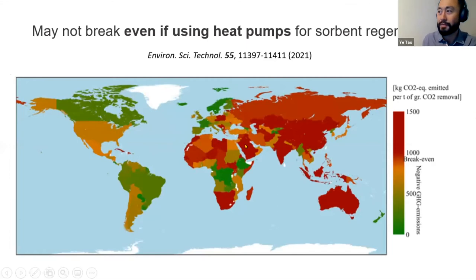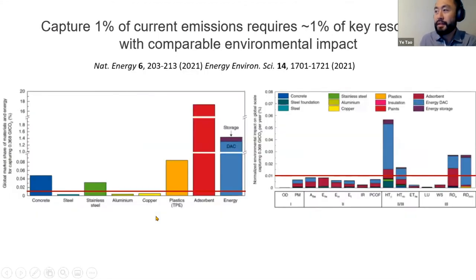The same thing goes for additional material consumption. If we want to capture one percent of current emissions, we need to increase material demand and environmental degradation by roughly one percent, sometimes more. By this metric, air capture is not a feasible candidate to consider.